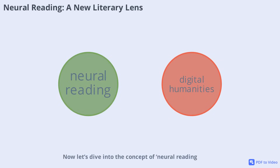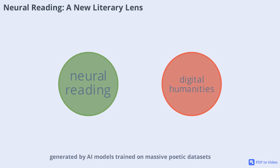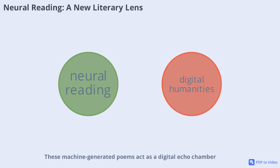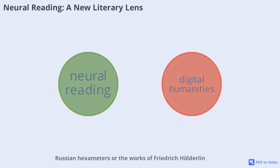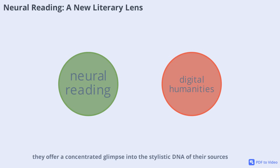Now let's dive into the concept of neural reading. Unlike traditional distant reading, which relies on quantitative analysis of large corpora, neural reading invites us to closely interpret texts generated by AI models trained on massive poetic data sets. These machine-generated poems act as a digital echo chamber, reflecting the stylistic features of entire genres or periods. For example, when a neural network is trained on Russian hexameters or the works of Friedrich Hölderlin, it produces new verses that mimic the original's rhythm, vocabulary, and even creative quirks. While these poems may lack coherent narrative, they offer a concentrated glimpse into the stylistic DNA of their sources.